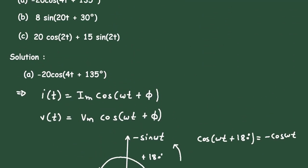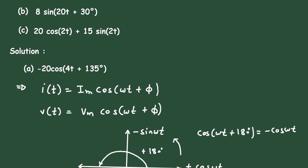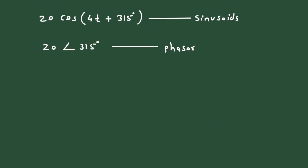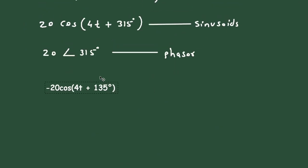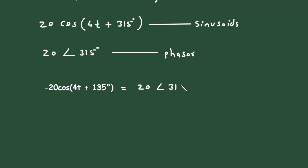We can now easily convert this sinusoid to a phasor. It will be 20 at an angle of 315°, and this is the phasor form. Therefore, the answer is 20∠315°.